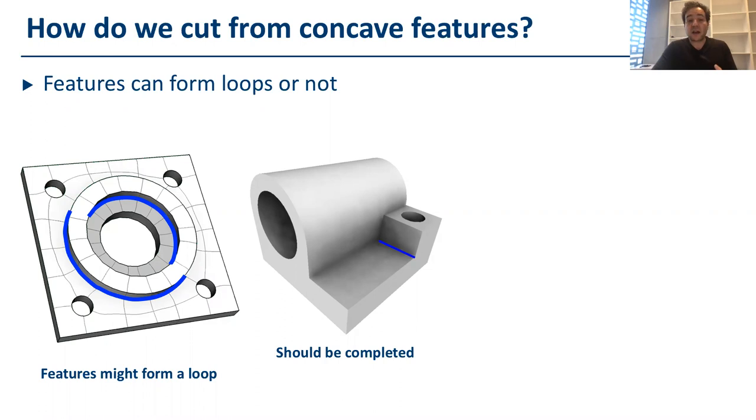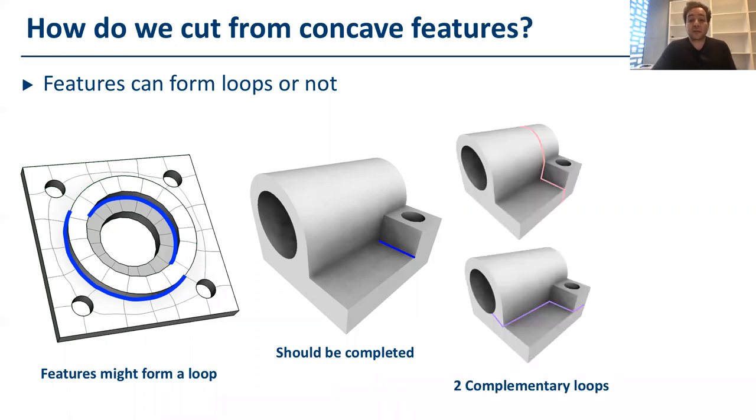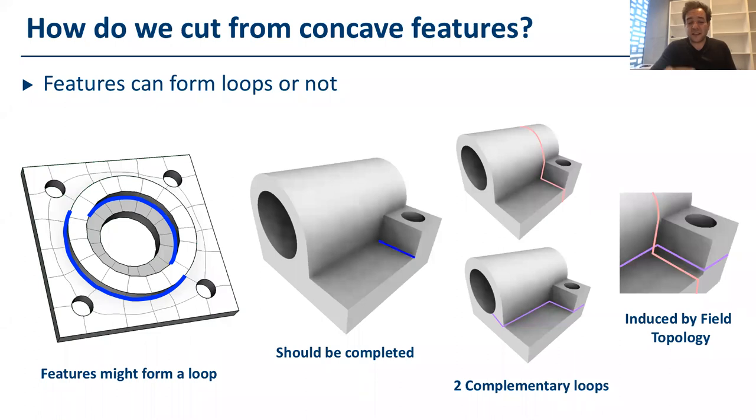So, in this case, we want to trace two complementary loops that define us how to cut the object into different directions. It is interesting to notice that these two different complementary loops are induced by the field topology itself. And then we can use these two loops to split the object and the volume into different slides.